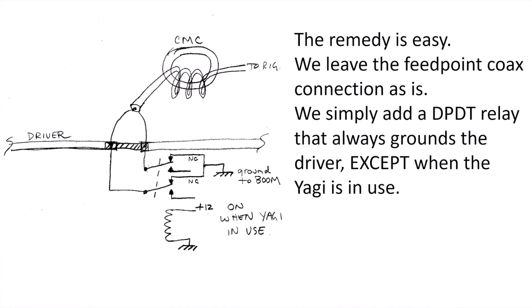So what's the remedy for this? It's easy. We leave the feed point coax connection as is. We don't change anything to the feed point to our Yagis. We simply add a double pole, double throw relay that is always grounding the driver, except when the Yagi is in use. If you look at the schematic here to the left, the normally closed contacts are always grounding the element, which is bypassing the common mode choke. So whenever we're transmitting on our shunt feed frequency, this element is grounded. The relay will then open up whenever activated, and the relay is only going to be activated when we're using the Yagi on that band.